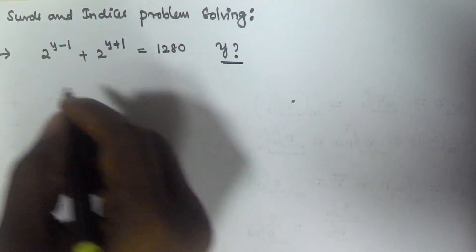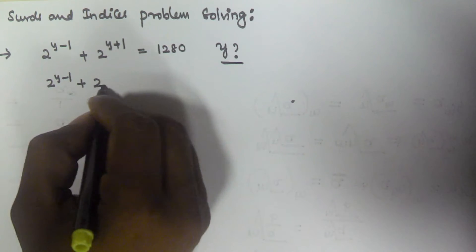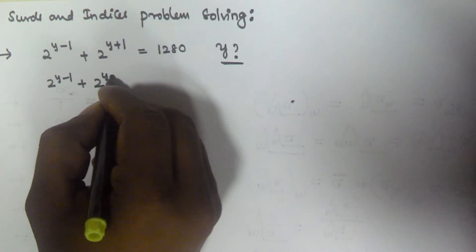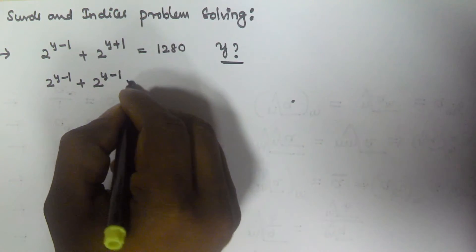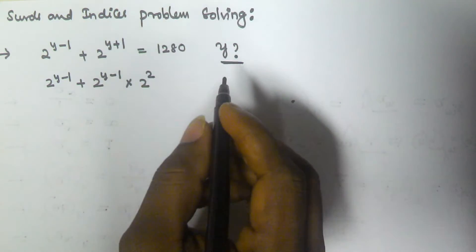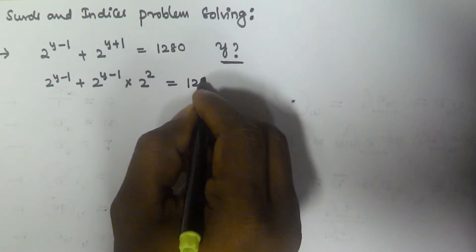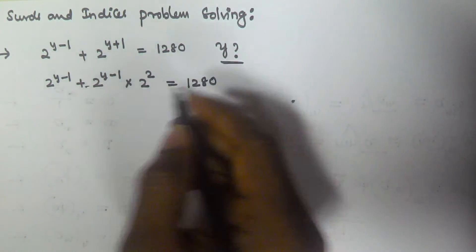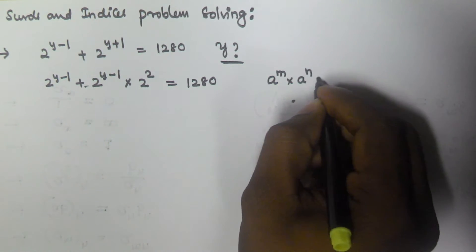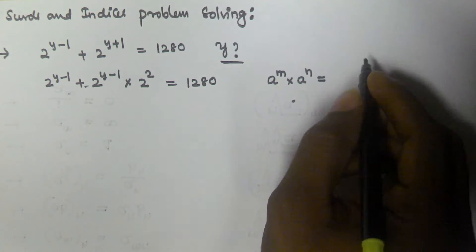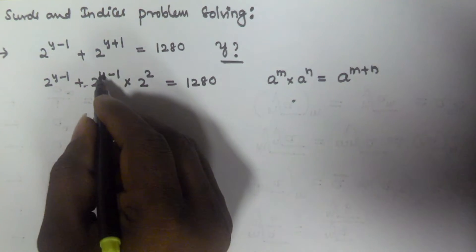We have 2^(y-1) plus 2^(y+1). I write 2^(y-1) times 2^2, equal to 1280. I am writing it this way because of the indices rule: a^m times a^n equals a^(m+n). The base is the same here.